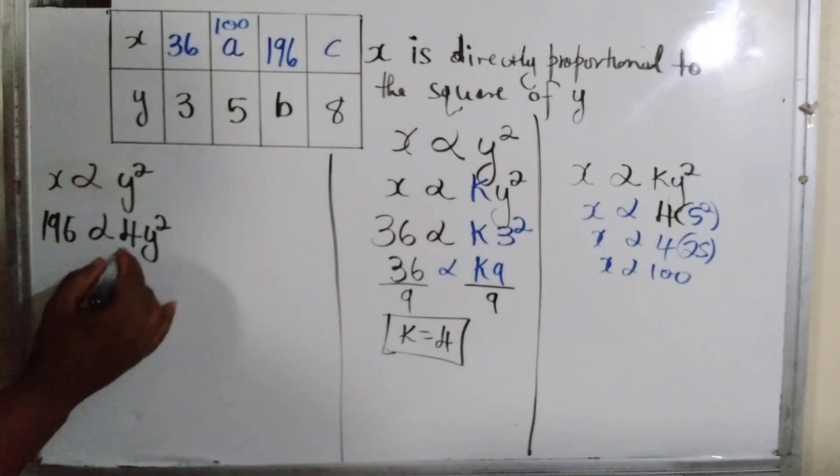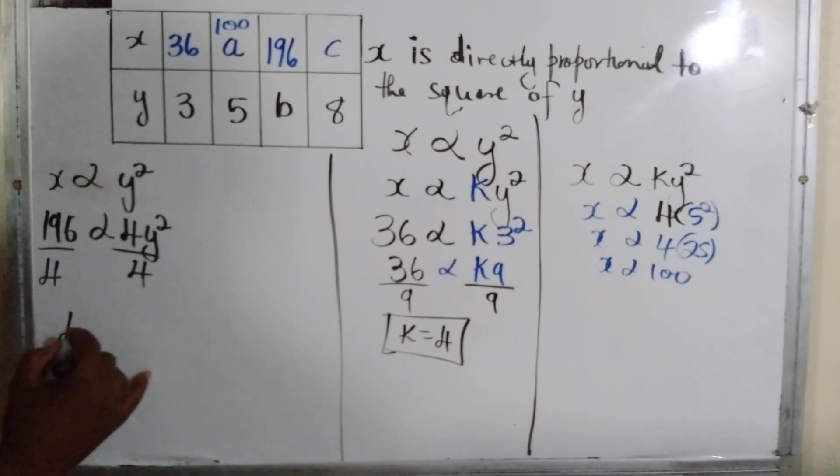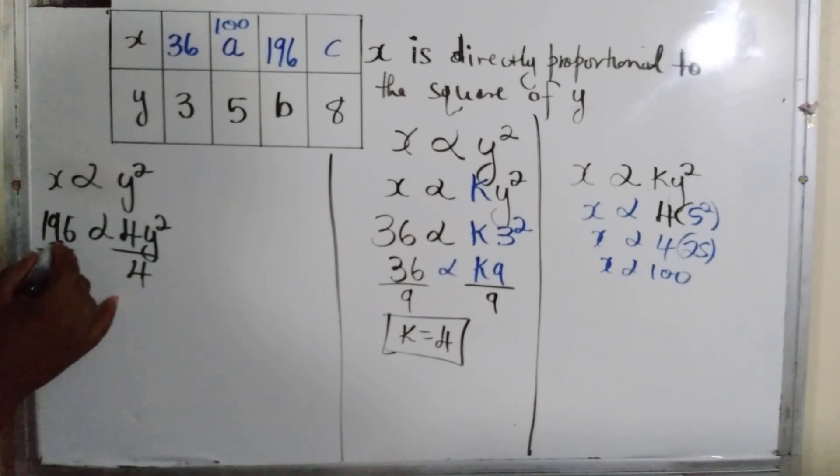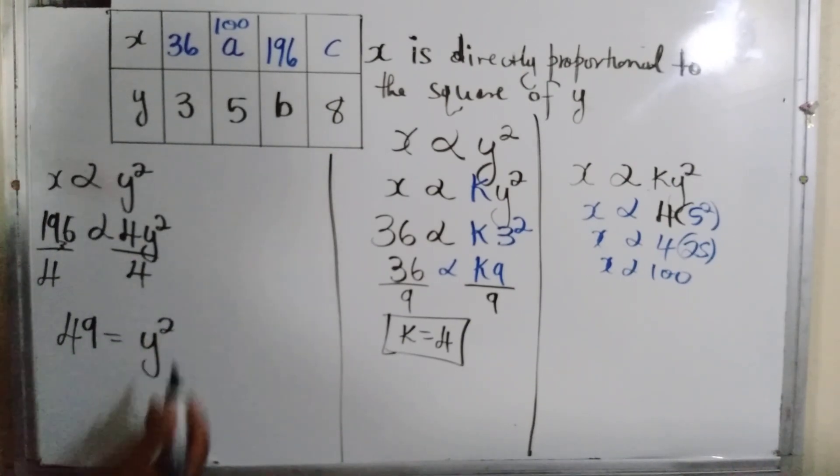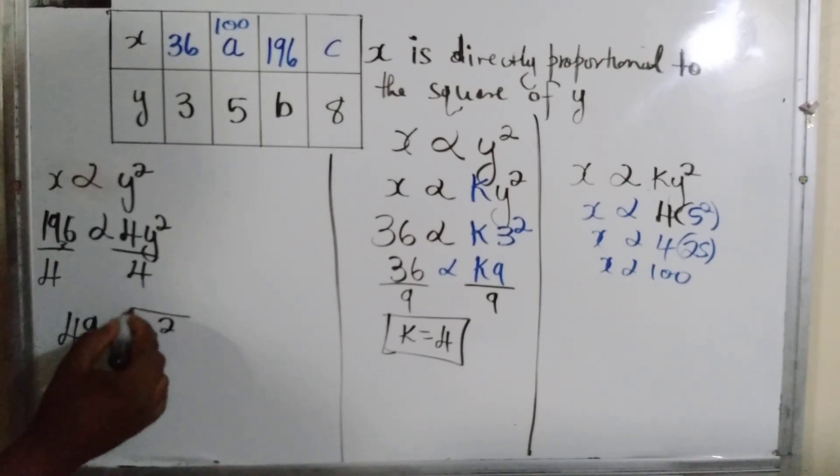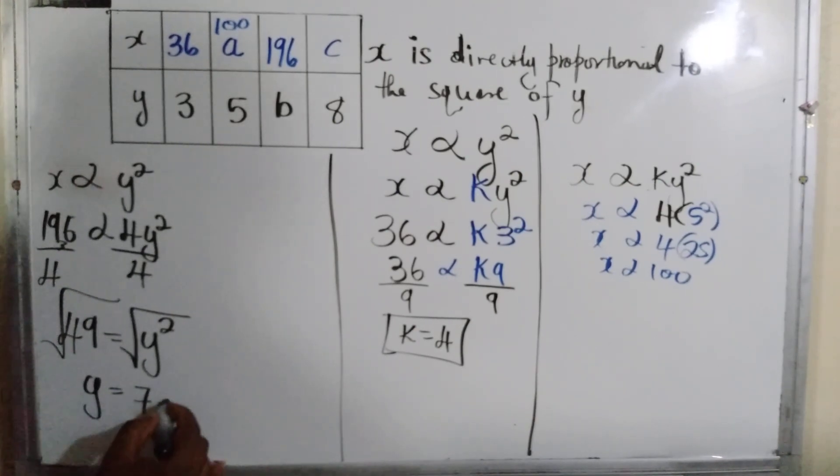To get rid of this we divide by 4. That should give us 49. Now we have y squared, so we take the inverse. y is equal to 7.